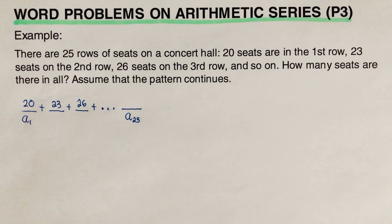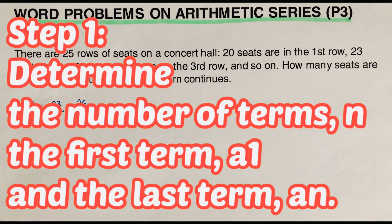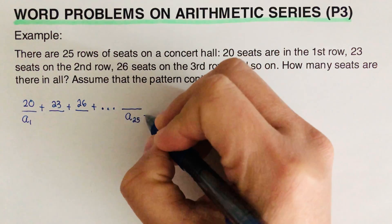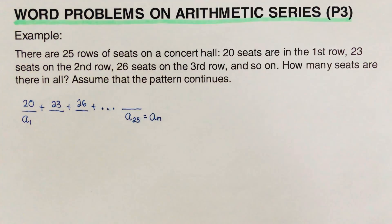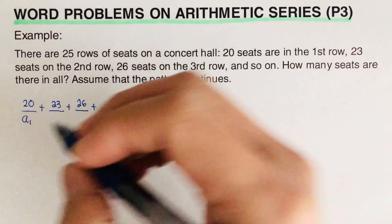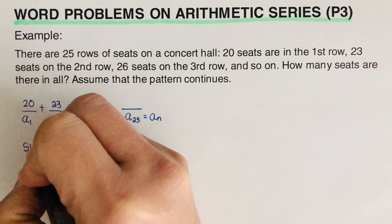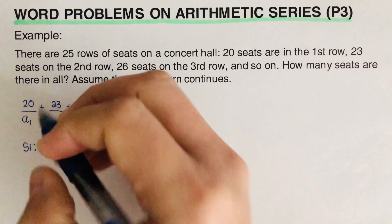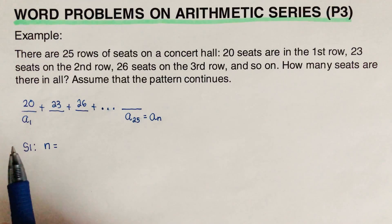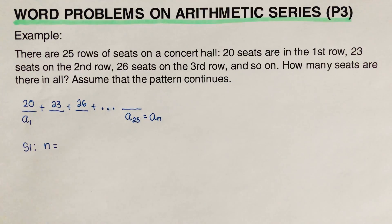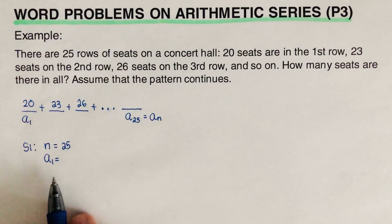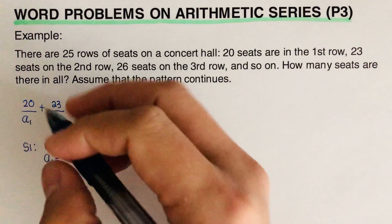To solve this arithmetic series problem, we follow some steps. Step 1: determine the number of terms n, the first term a-sub-1, and the last term a-sub-n. In this problem, a-sub-25 is the same as a-sub-n. So our n is 25, since there are 25 rows, and our a-sub-1 is 20 seats.